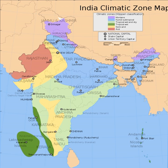India's geography and geology are climatically pivotal. The Thar Desert in the northwest and the Himalayas in the north work in tandem to effect a culturally and economically important monsoonal regime. As Earth's highest and most massive mountain range, the Himalayas bar the influx of frigid katabatic winds from the icy Tibetan plateau and northerly Central Asia. Most of North India is thus kept warm or only mildly cold during winter, and the same thermal dam keeps most regions in India hot in summer.